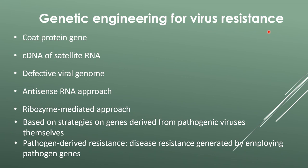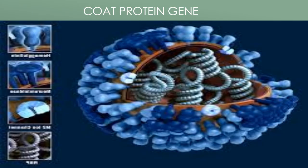Genetic engineering for virus resistance uses: coat protein genes, cDNA of satellite RNA, defective viral genome, antisense RNA approach, and ribozyme-mediated approach. These are all based on pathogen-derived resistance, which is resistance generated by employing pathogen genes.